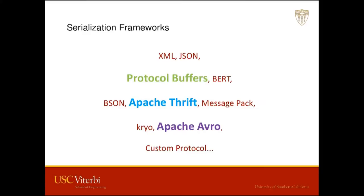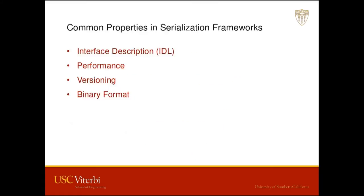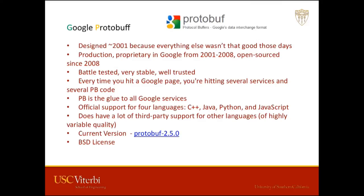So the three I'm going to cover are Protocol Buffers, Apache Thrift, and Avro. I'm also going to talk about JSON a little bit. Some of the common properties in all these serialization frameworks: they all have an interface description language or IDL, they all have high performance, they all have versioning, and they all support some sort of a binary format.